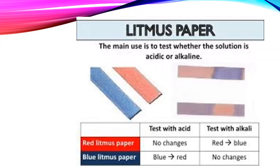Litmus paper test — the main use is to test whether the solution is acidic or alkaline. Red litmus paper test with acid: no change. Test with alkali: red turns into blue. Blue litmus paper test with acid: blue turns into red. Test with alkali: no change. This is the litmus paper test for acid and base.